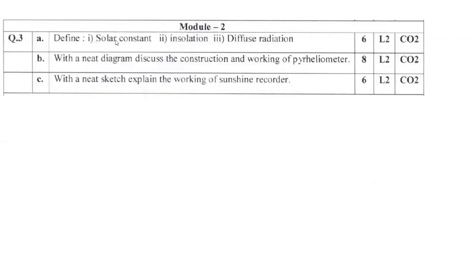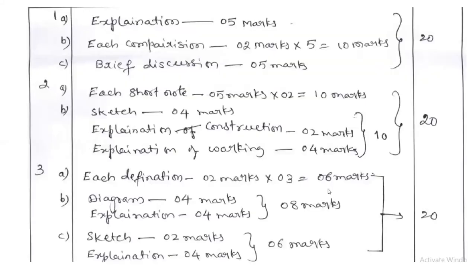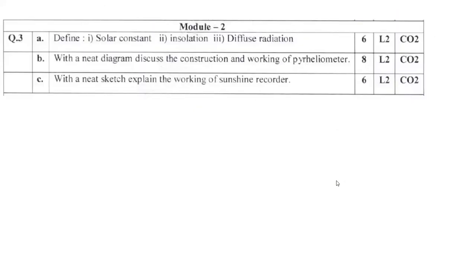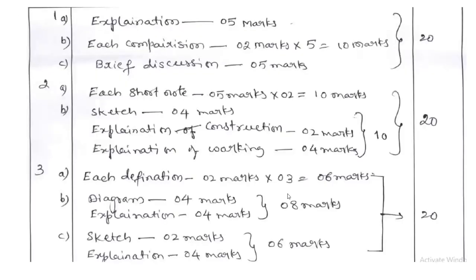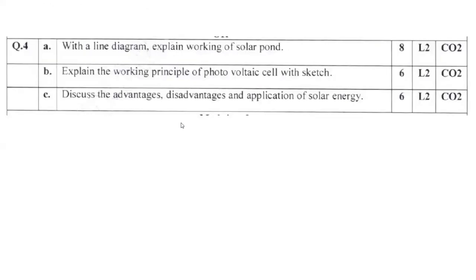Question 3A: define solar constant, insulation, diffusion, radiation. 2 plus 2 plus 2 equals 6 marks. With a neat diagram, discuss construction and working of pyrheliometer. You might have seen pyrheliometer in the last question paper. The answer key: each definition 2 marks times 3 equals 6 marks. What is solar constant, insulation, diffused radiation? Diagram with explanation 8 marks. With neat sketch explain working of sunshine recorder: sketch 2 marks, explanation 4 marks, overall 6 marks.